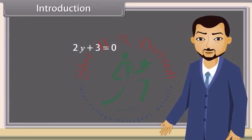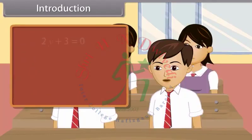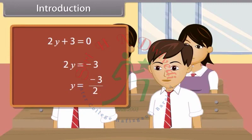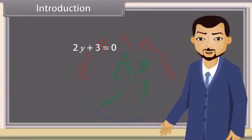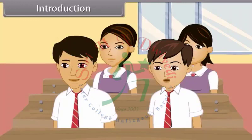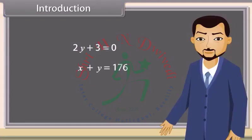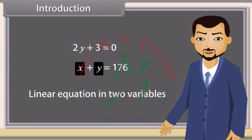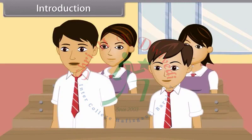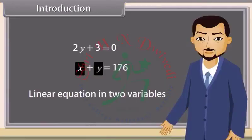Can you solve this equation? Yes, this is so easy. Correct. Now tell me which equation is this? This is also a linear equation. Yes, this is also a linear equation, but it has two variables, X and Y. So it is called a linear equation in two variables. We want to know more about this, sir. Okay. So we will study linear equations in two variables today.